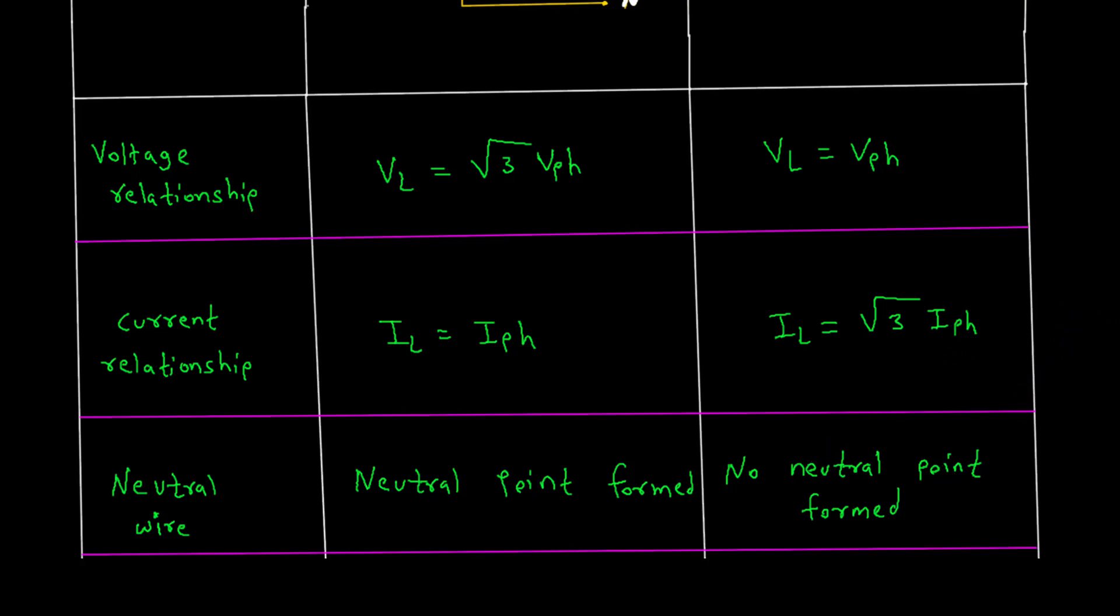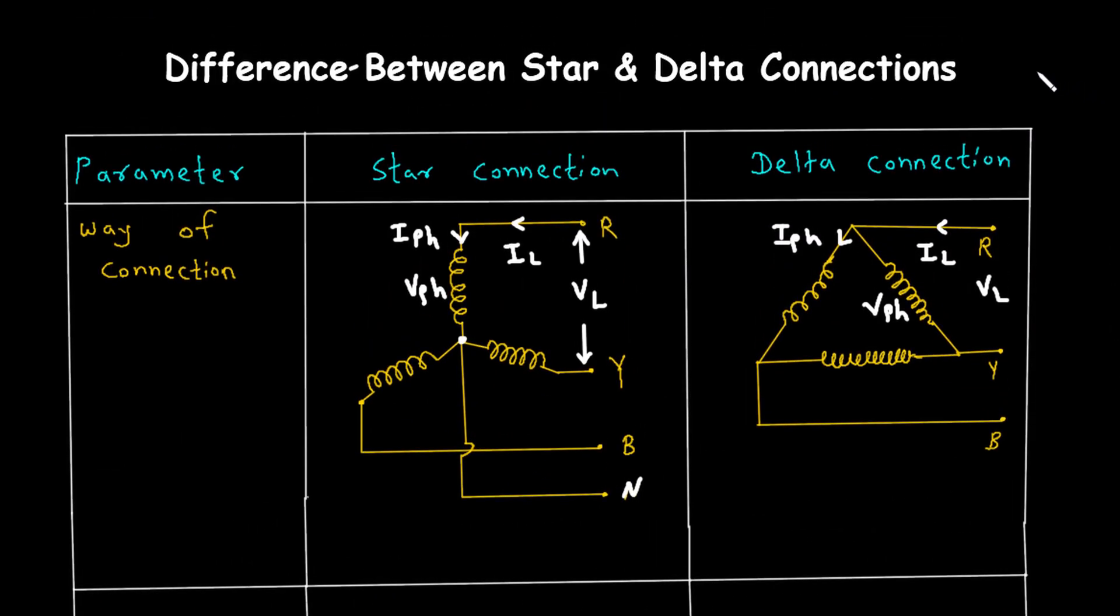Understanding the differences between star and delta connections helps in designing and implementing electrical systems that are safe, efficient, and suited to their specific applications. Whether you're dealing with power distribution or industrial machinery, knowing when to use each type of connection is key.